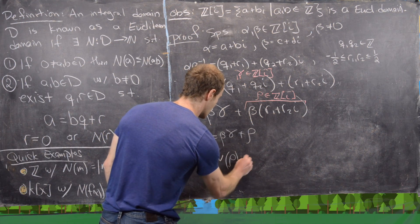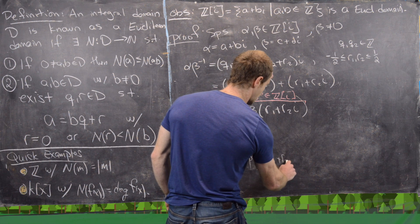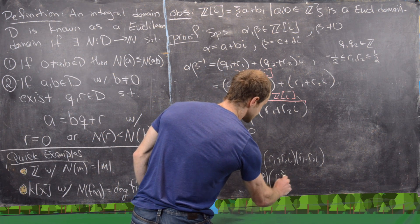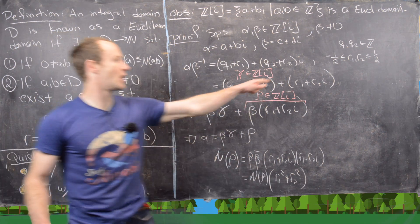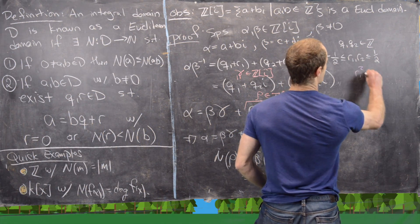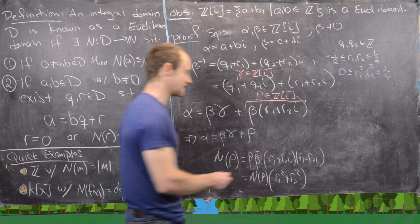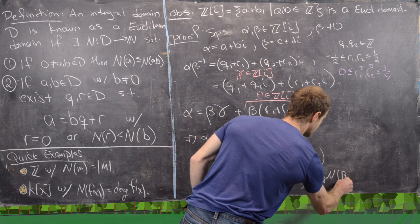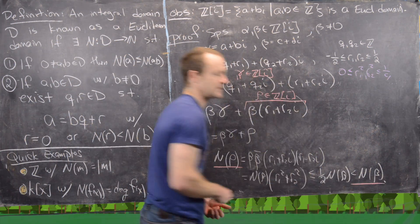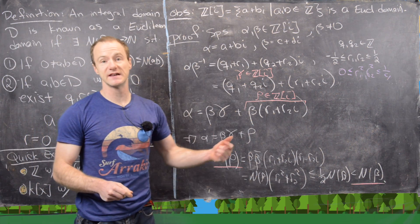We just need to check the norm of ρ. Using the norm formula: N(ρ) = β·β̄·(r₁ + r₂i)(r₁ − r₂i) = N(β)·(r₁² + r₂²). Since r₁ and r₂ are each in [−½, ½], we have r₁² + r₂² ≤ ½, which is strictly less than 1, so N(ρ) < N(β). That satisfies the second rule for a Euclidean domain, completing the proof that the Gaussian integers form a Euclidean domain.